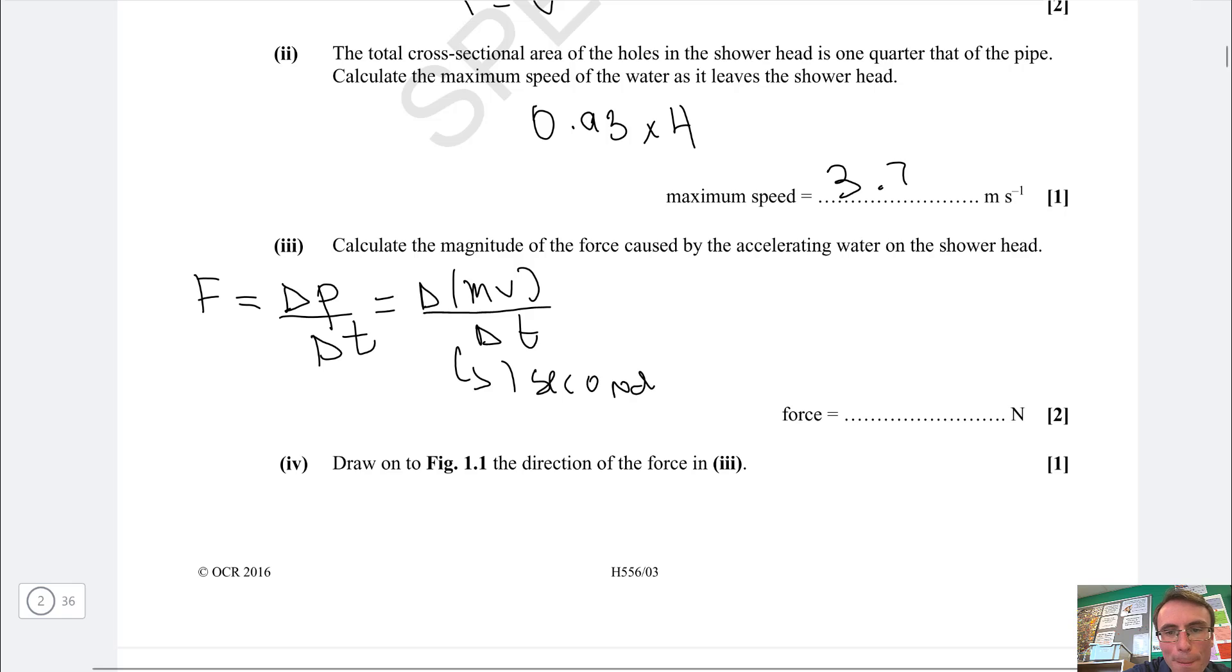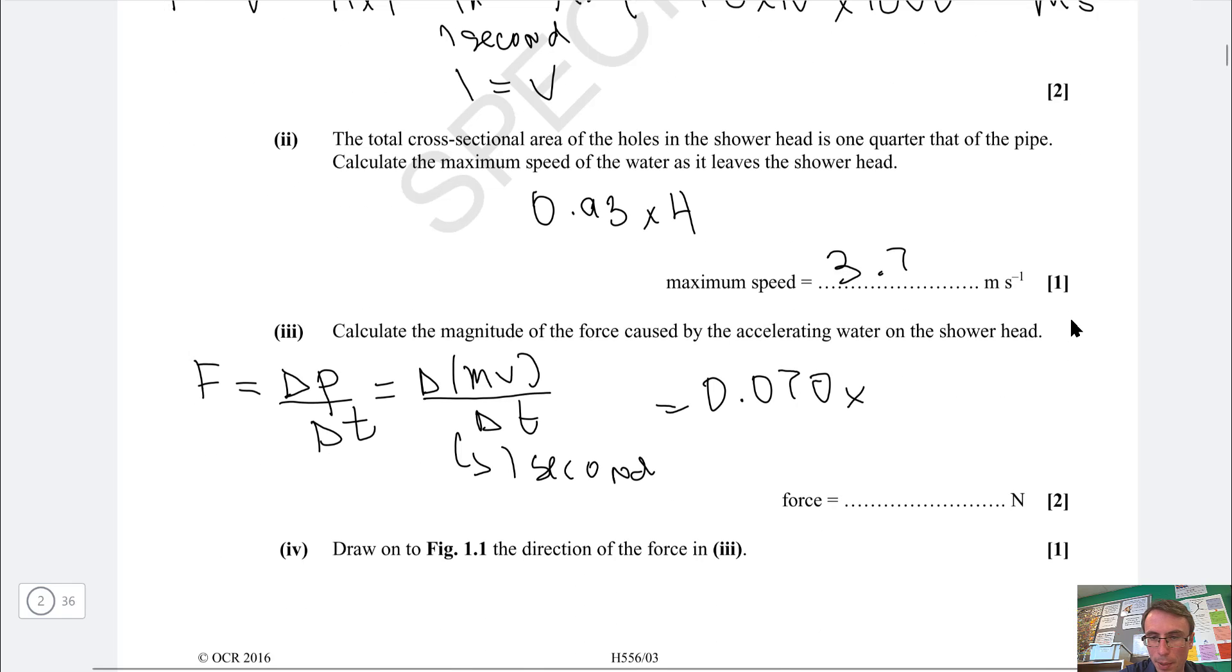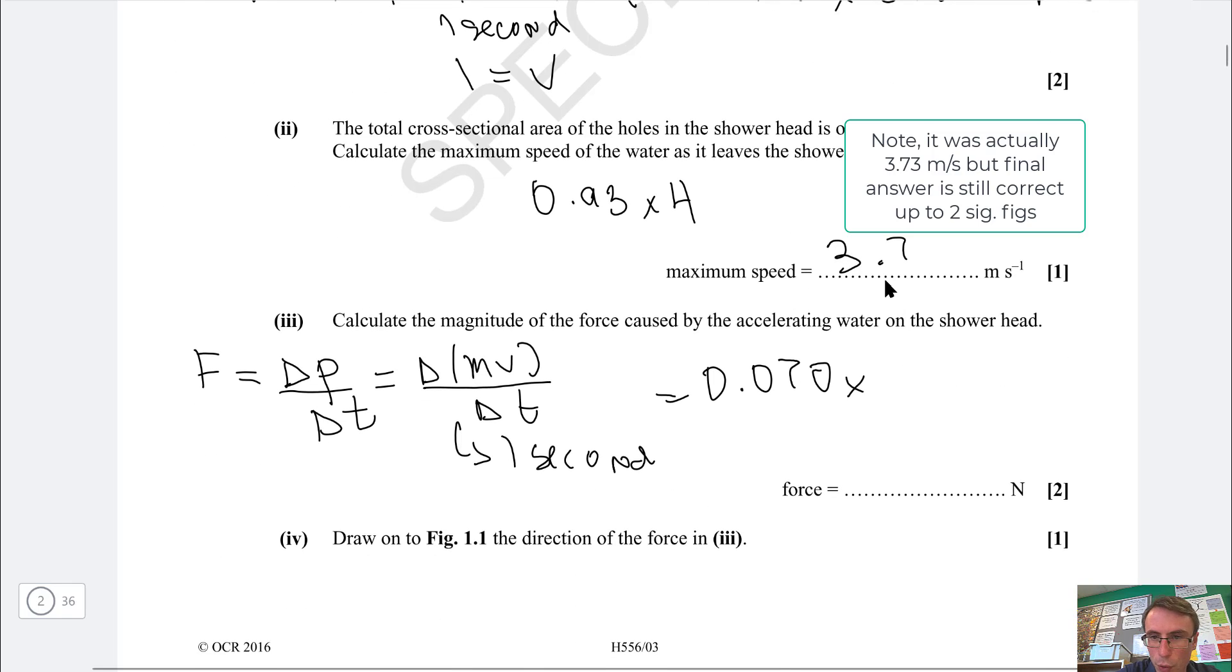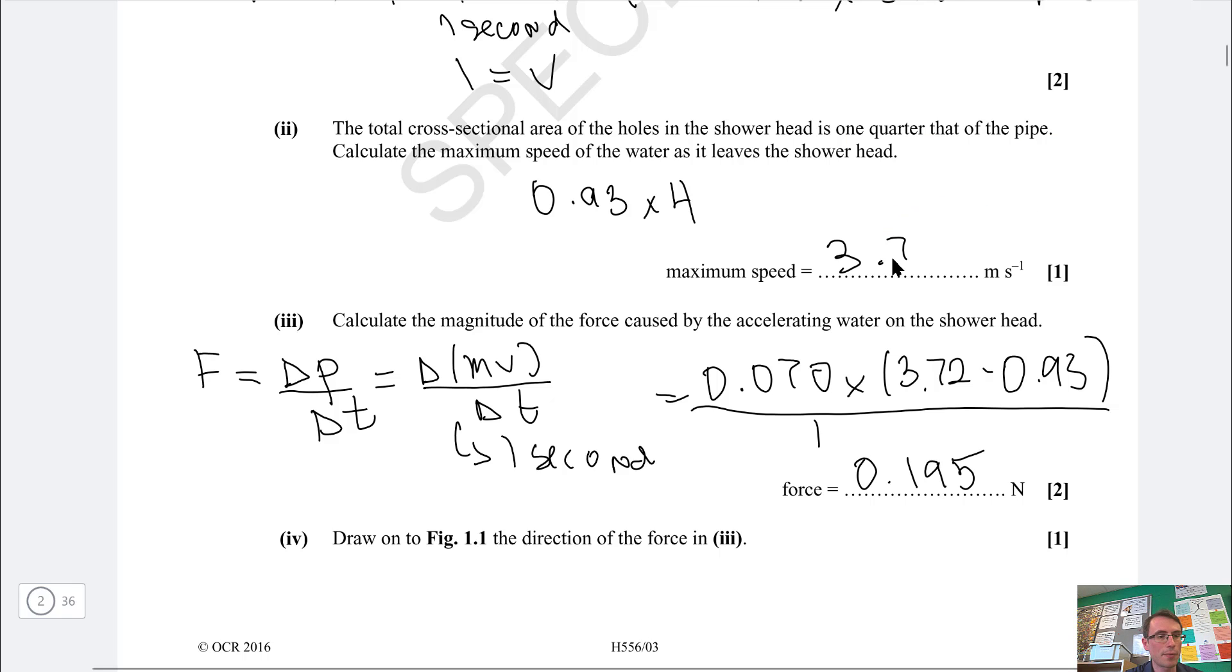How much mass flows through the shower head in one second? We're already given that, it's 0.070. The speed has changed from 0.93 meters per second in the pipe up to 3.72. Our change in speed will be given by the difference between those two numbers, 3.72 take away 0.93. All of this happens in one second. If we put this into a calculator we're going to get 0.195 newtons.